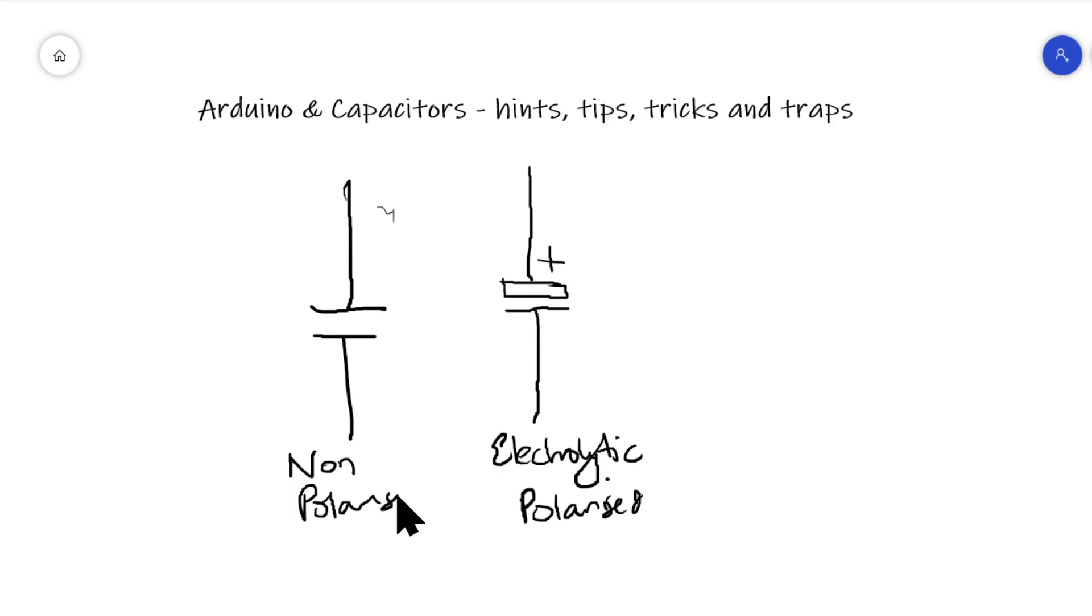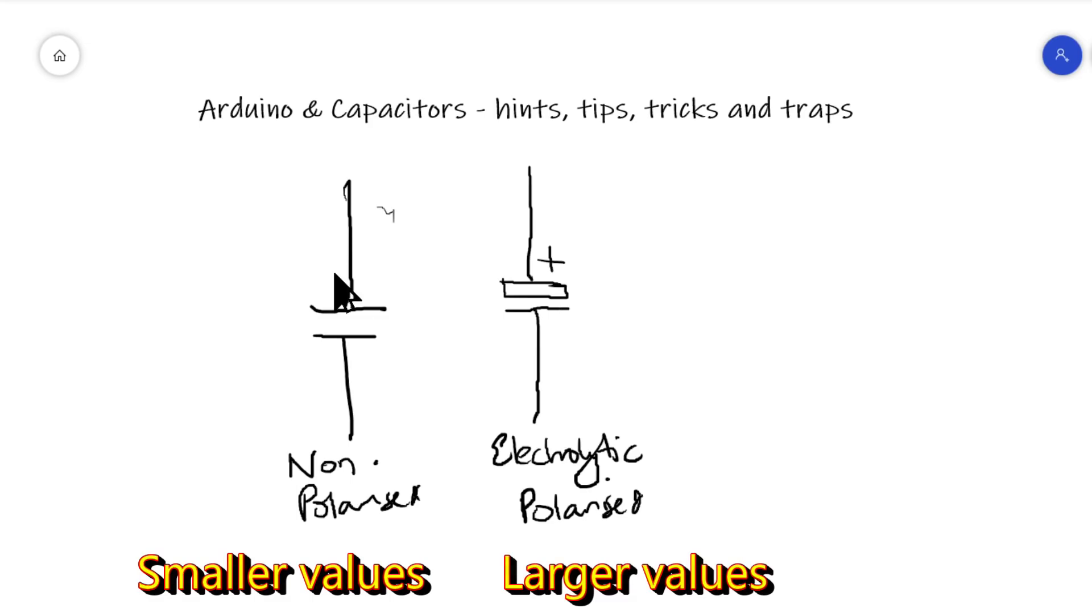Now, this one is non-polarized, which means it just doesn't matter which way around this connects it up. This could be plus here or minus here or the other way around. Not a problem either way. So that's the two types of capacitor that we'll be concentrating on in an Arduino environment.